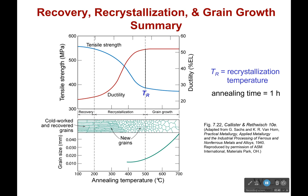Let's look at this again and see what has happened to our particular materials. We have our cold worked grains right here — these are our cold worked grains but they've been recovered, meaning all the dislocations that were inside of them are gone. Then as we move into the recrystallization temperature, we begin to eat away at our large cold worked grains, and instead they begin to get cut into pieces and turned into a bunch of more uniformly sized small grains. And those grains, as we reach the grain growth section, will begin to grow into larger and larger grains.